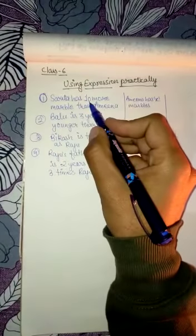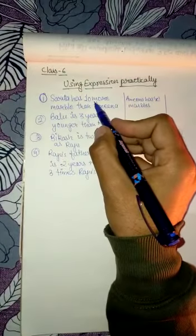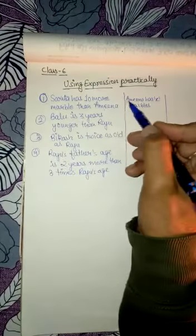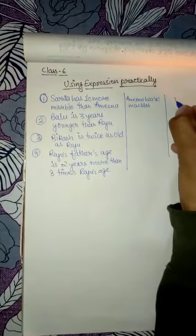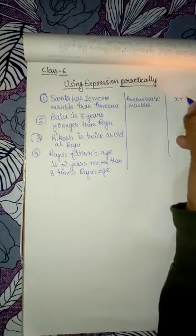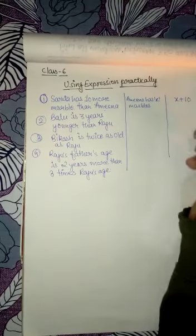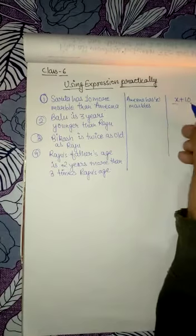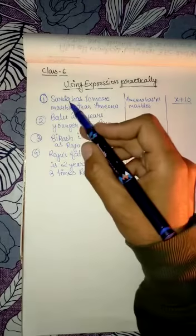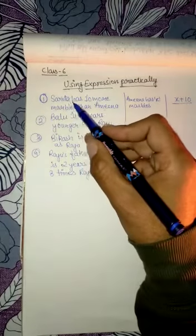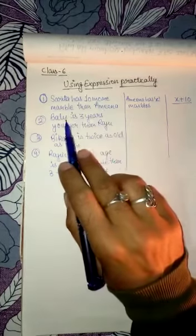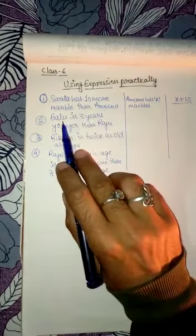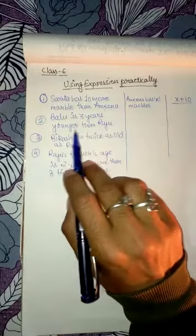Sarita has 10 more marbles — 'more' means we have to add — so X plus 10 will be the expression for the number of marbles Sarita has. Now in the second question, Balu is three years younger than Raju.